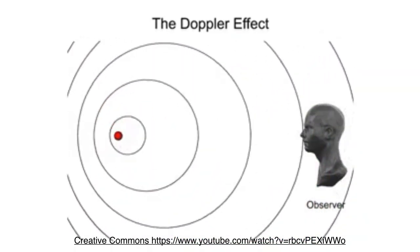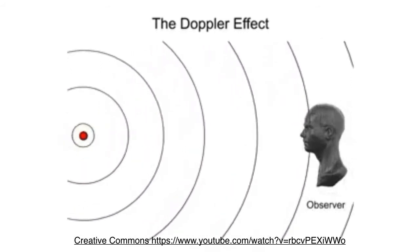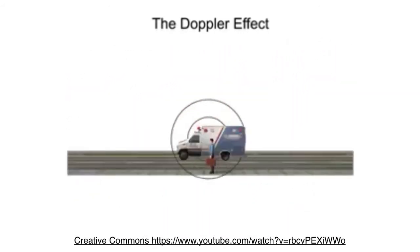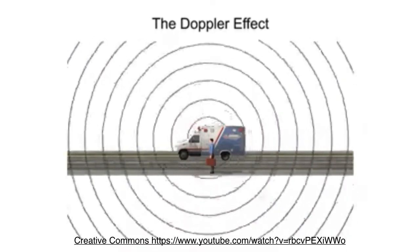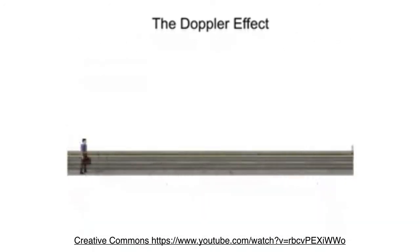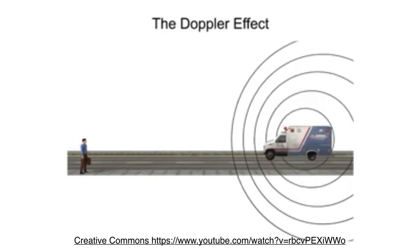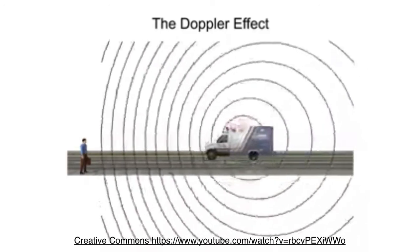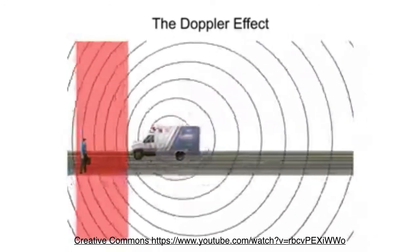Let's look at the Doppler effect as it relates to the sound waves produced by the siren of a moving ambulance. A stationary ambulance produces a consistent siren at a steady pitch; the sound waves are uniform from all sides. As the ambulance moves forward, it continues to produce a uniform sound wave, yet the sound waves in front of it start to bunch up, increasing the wave's frequency. To an observer, the siren of the oncoming ambulance is perceived at a higher pitch.